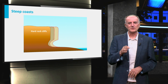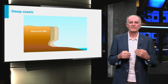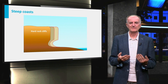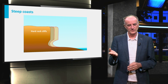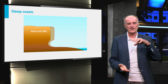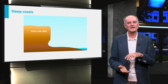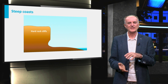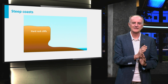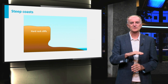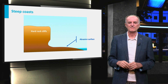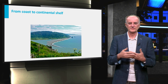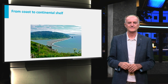On a steep coast, the waves hit with the full power of the cliffs with strong erosive energy. As a result, the foot of the cliff is eroded, causing the collapse of the overlying rocks and the retreat of the cliff face. An abrasion surface is created. Steep coasts are very different from flat and shallow coasts.